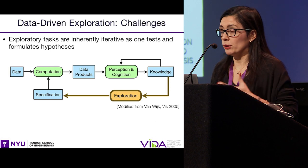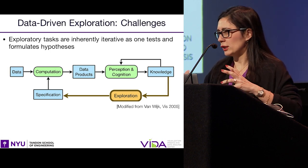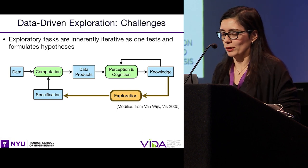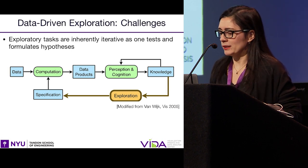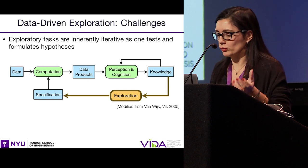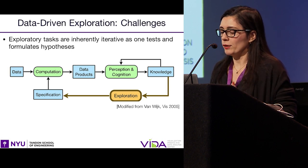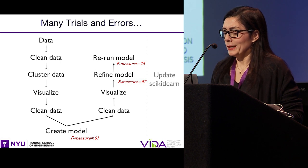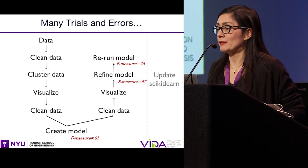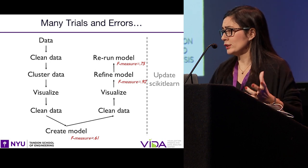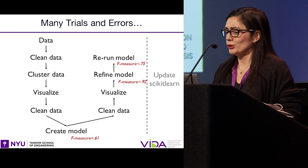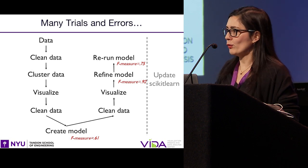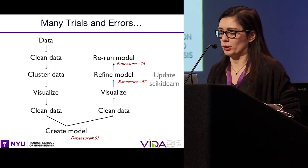For example, you get some data, you need to build a model. You first have to clean the data, you cluster the data to get a sense of what it looks like, you create a visualization, you find issues, you clean the data again, you create your initial model, the performance is not that great, you go ahead transforming your data even more, visualizing, refining your model — oh, you got a good result, 92%. Then you rerun your model, you get 0.75%, and behind your back, your system administrator updated scikit-learn. So now you get a result, you don't know if you used the right version of the data from all the different versions that you have cleaned, or if it was the update to scikit-learn that actually impacted your results.